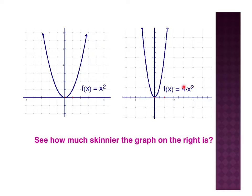That's very important. With this 4 not being affected by that squared part, that means it's a vertical stretch. So I have a vertical stretch — we notate that with a V — and what I'm doing is a vertical stretch by a factor of 4, meaning my graph is being stretched vertically by a factor of 4.